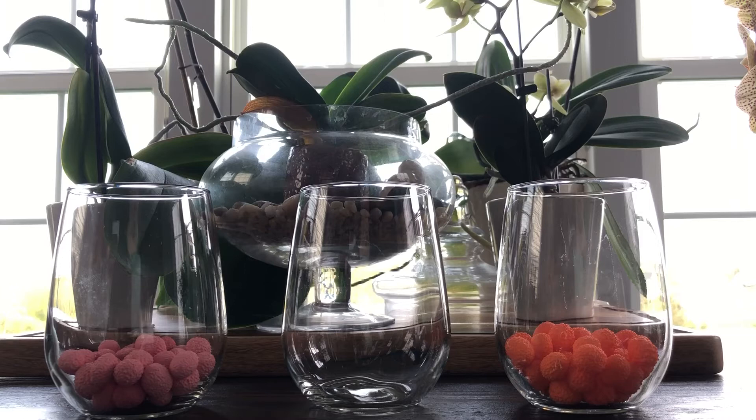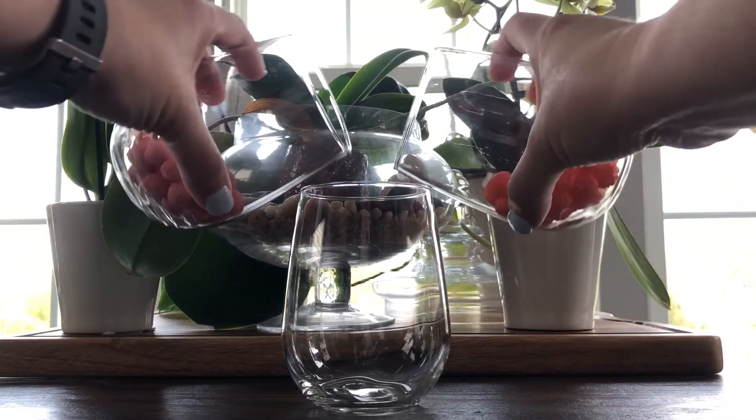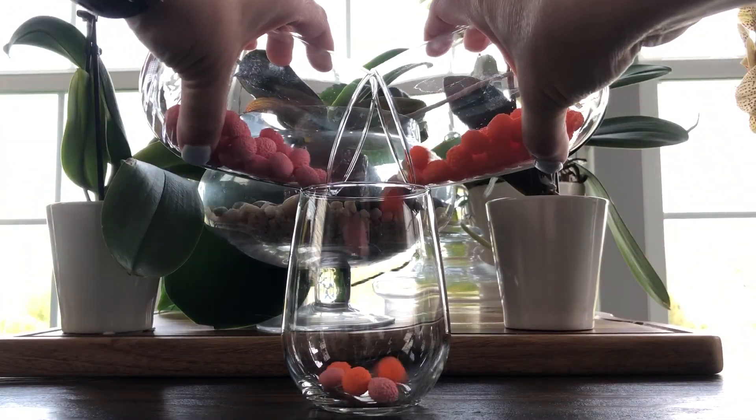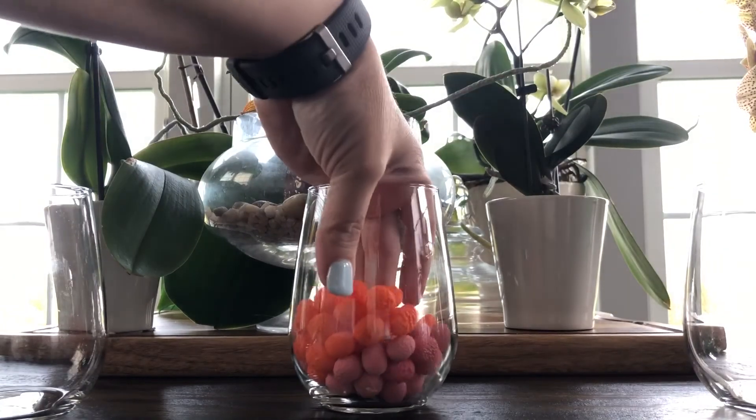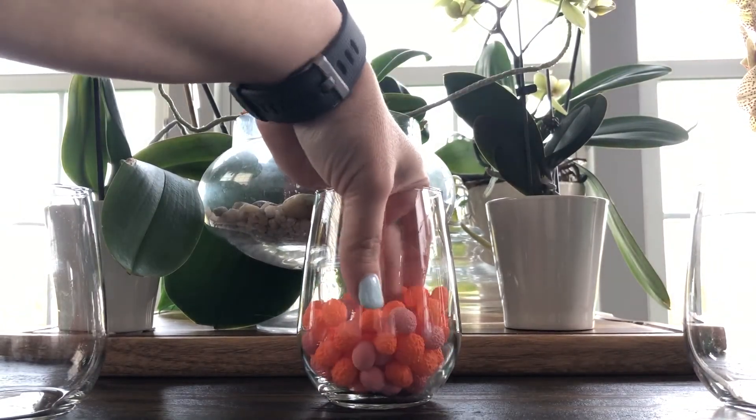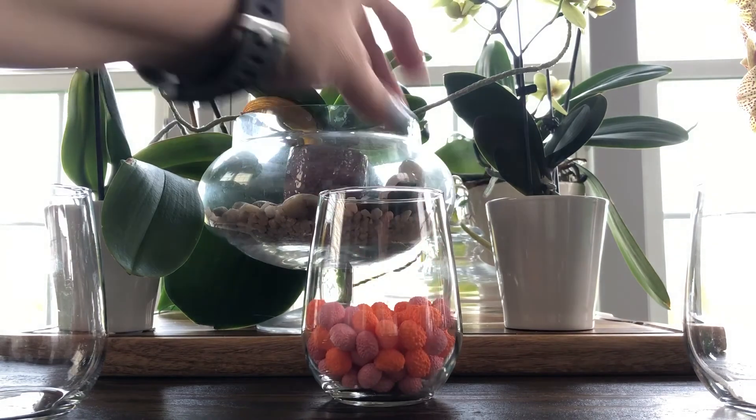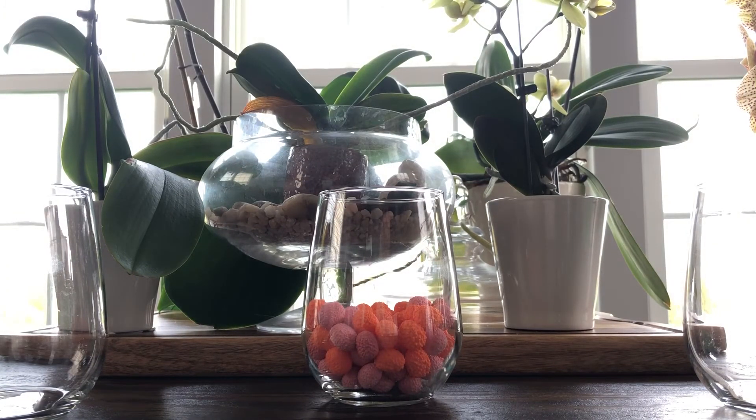For codominance, you would have one parent that is pink and one parent that is orange. And whenever they have an offspring, you would have a mixing of the two so that you see both the pink and the orange.